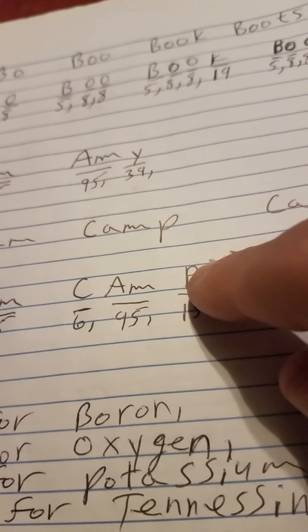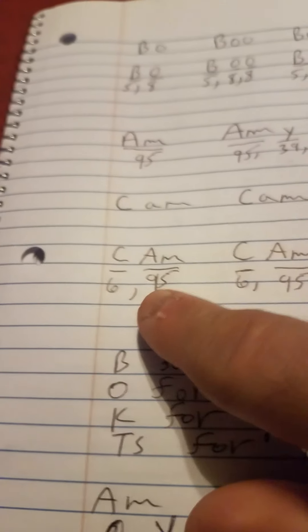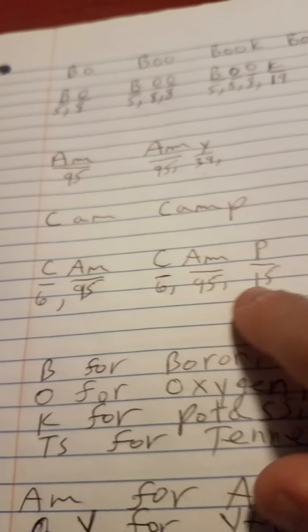And I added a P, a capital P for 15 atomic number, and a capital P is for phosphorus. And I got camp. I went from cam to camp. So you got 6, 95, 15.